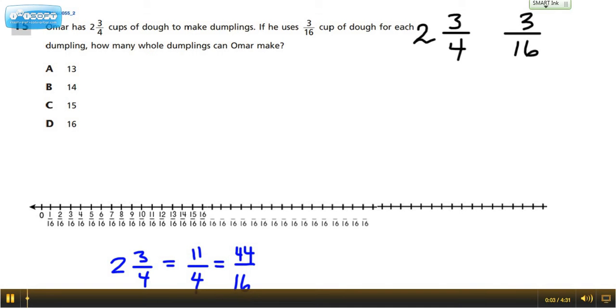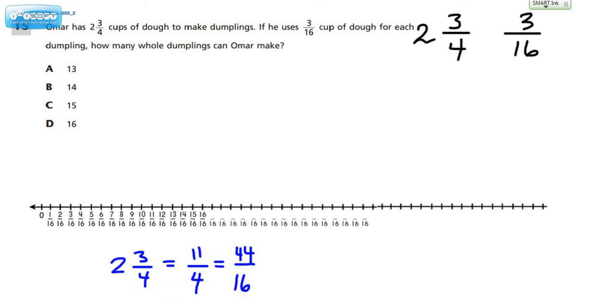Hey, everybody. Ms. Dietrich here, helping you with a question that's been released from the 2015 Grade 6 Common Core exam. It reads, Omar has two and three-fourths cups of dough to make dumplings.